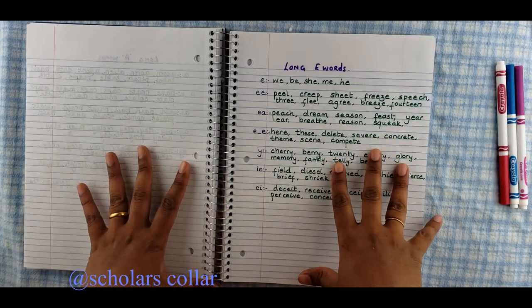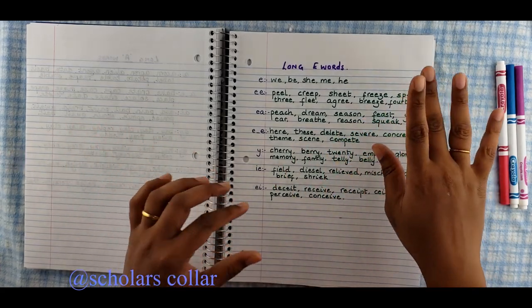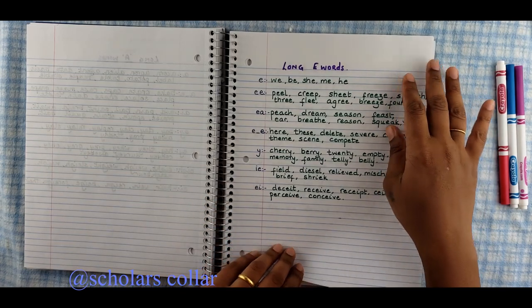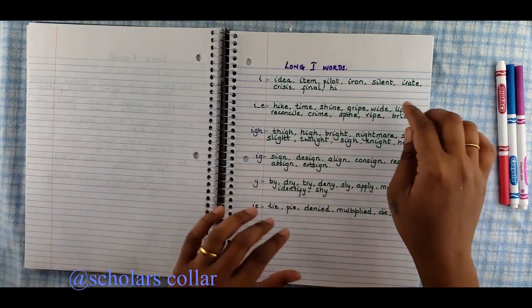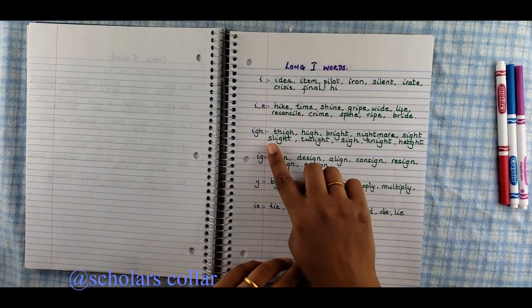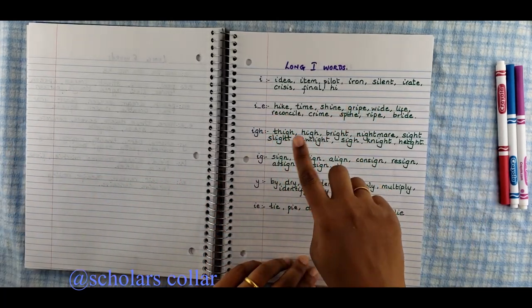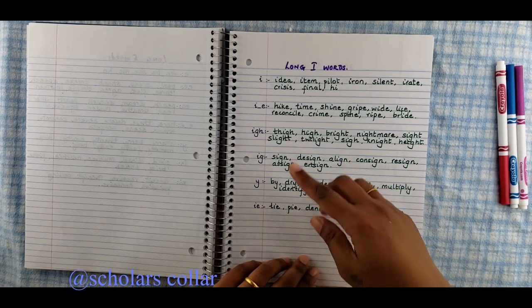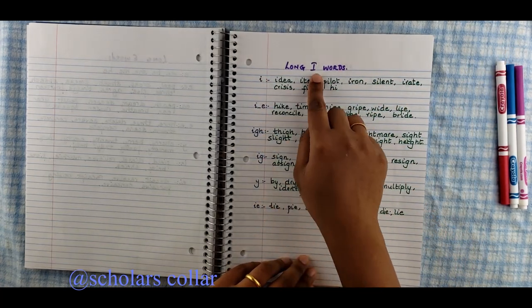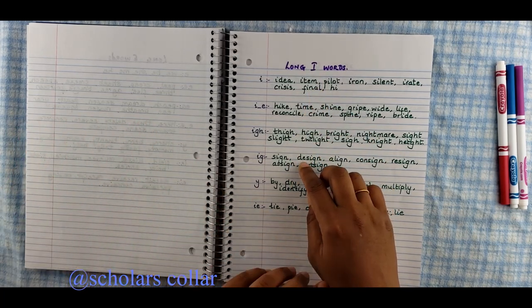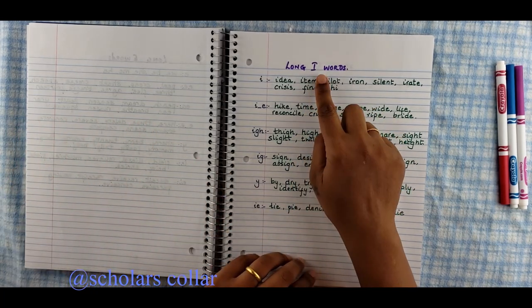E itself is a long E sound so V. Then double E will make peel. E and A will make peach. E split will be here. These delete. Y is also considered as a vowel sound. So W, Y, G and H, these are considered as vowel sounds. Cherry, field, DC, E, N, I, I and E.